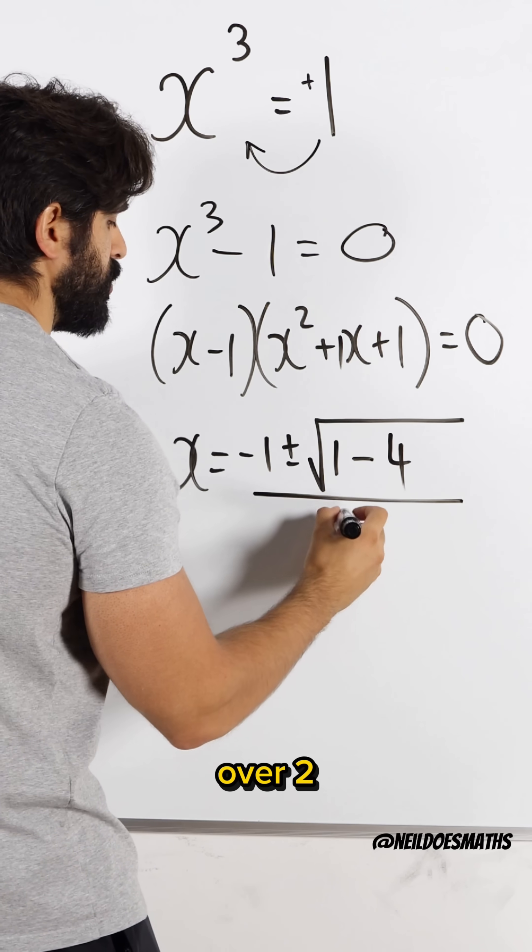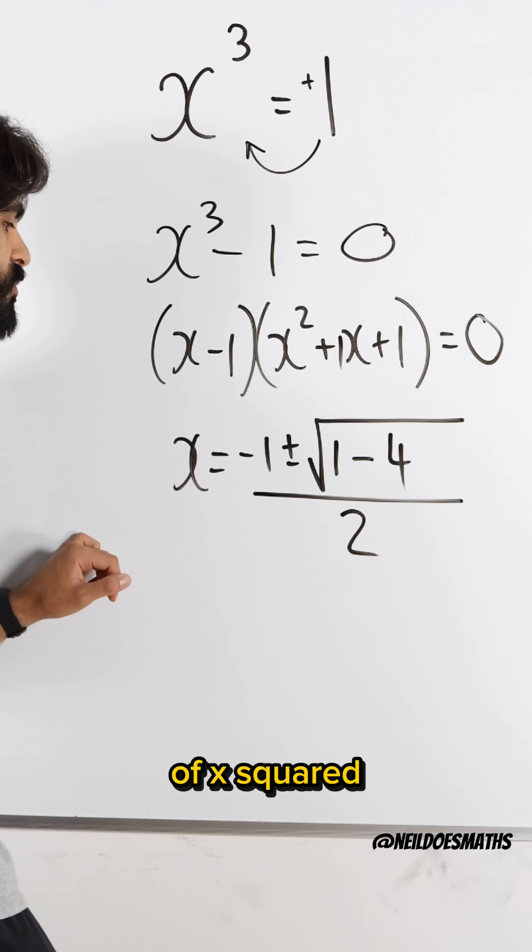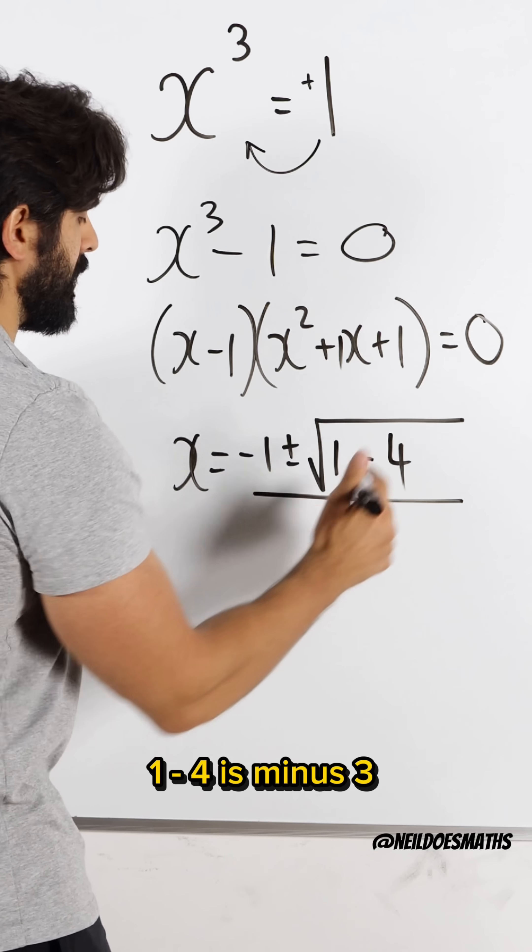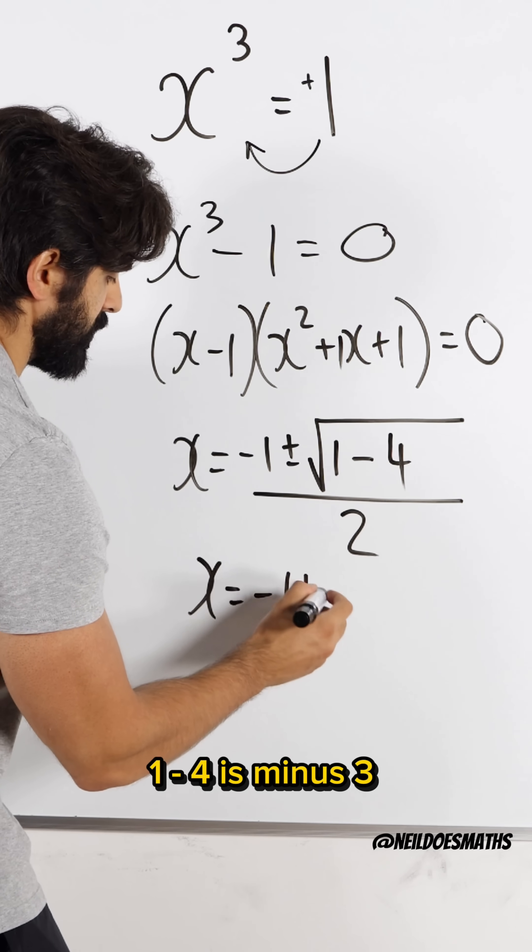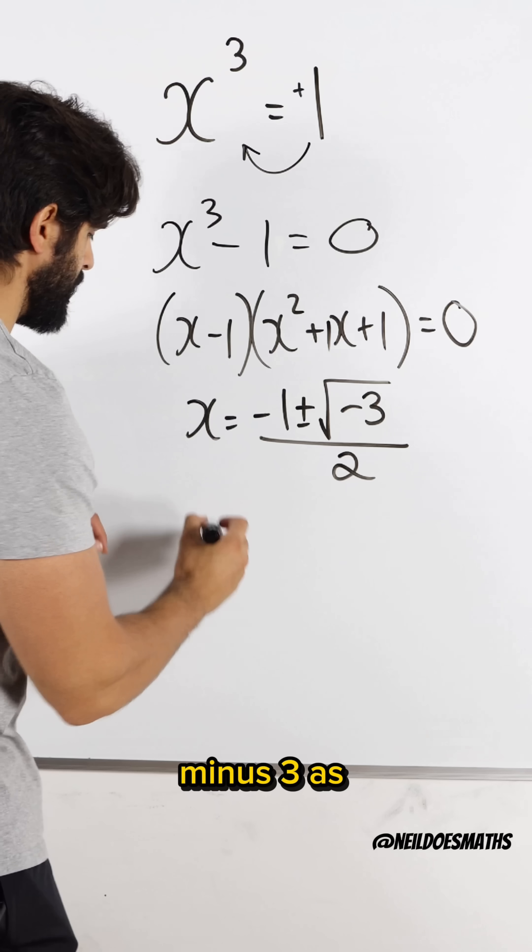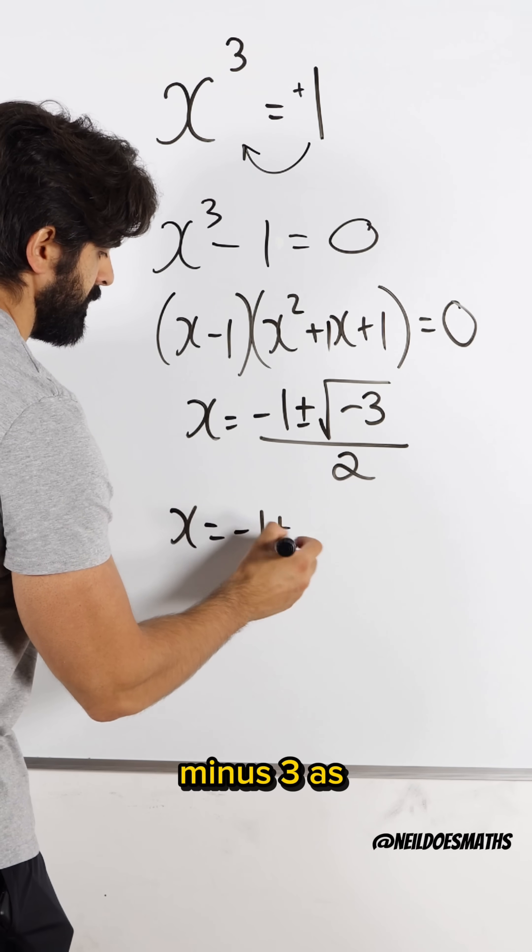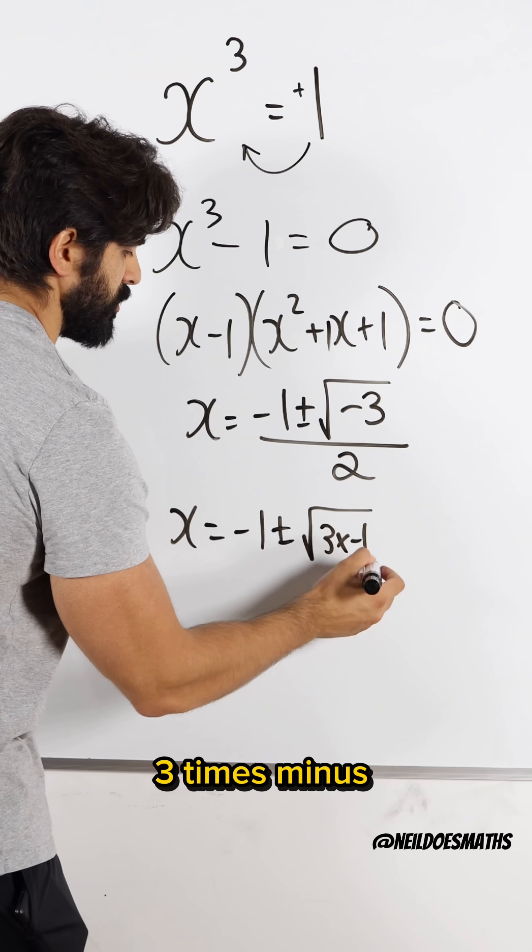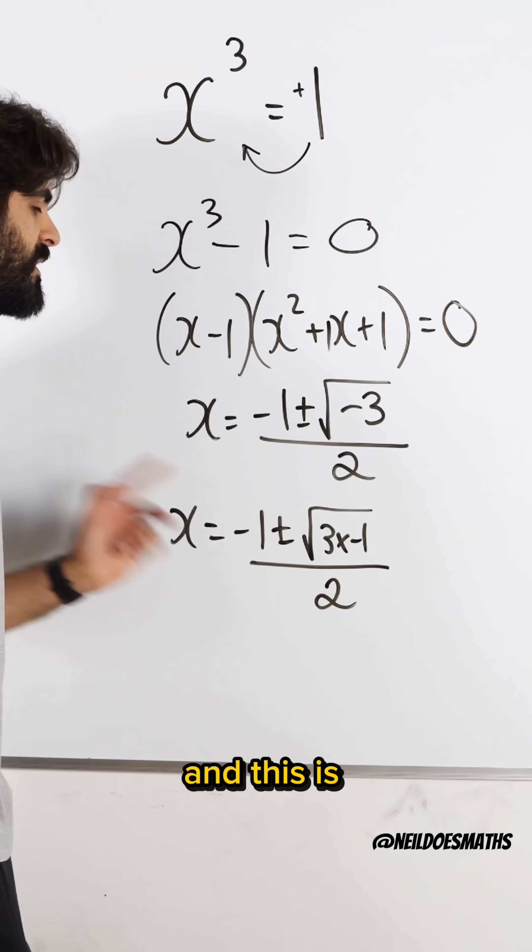All over 2 times the coefficient of x squared, which is just 1. 1 minus 4 is minus 3, all over 2. Now I can rewrite this minus 3 as 3 times minus 1 over 2.